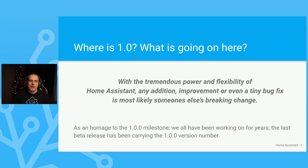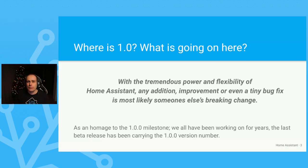So here I am. The main question is: where is 1.0? The main reason for not having 1.0 at this point is that with the tremendous power and flexibility of Home Assistant, any addition, improvement, or even a tiny bug fix is most likely somebody else's breaking change. We've been adding a lot of changes to the release notes lately — mentioning every breaking change and covering every tiny change, like fixing a typo in a unit of measurement. Yet we always run into things that were breaking for people's use cases that we never thought of. We have been running toward the 1.0 milestone for a long time already. Goals have been stretched and adjusted quite a bit because our user base grew and changed, and the world of IoT around us is rapidly changing as well.